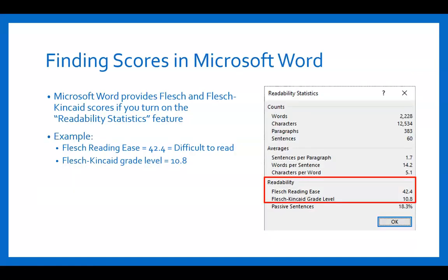You can find this information in Microsoft Word. If you are writing your own essay or document, or you can convert someone else's information into a Word document, you can turn on readability statistics — it's a feature that's normally off. This gives you automatic scoring for the Flesch Reading Ease and Flesch-Kincaid grade level. For example, a document's Flesch Reading Ease was 42.4 and the grade level was 10th grade point 8, so almost 11th grade.